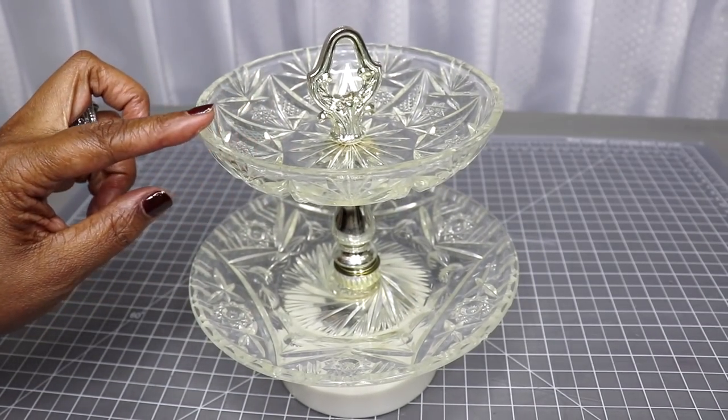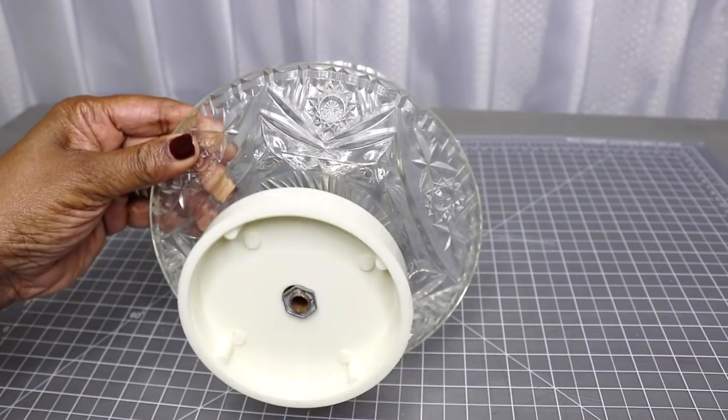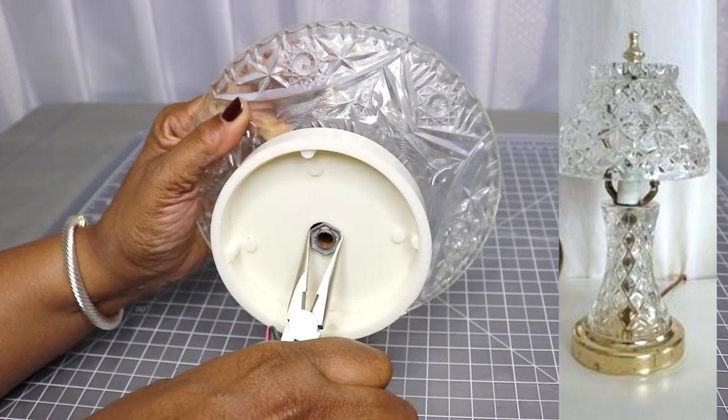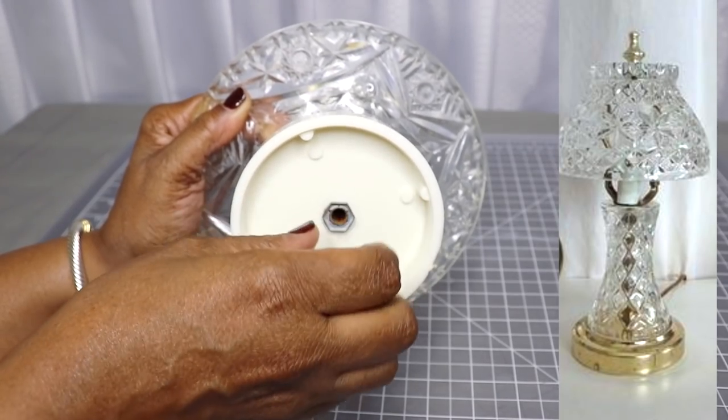So here is the candy dish that my mom gave me. It's a two-tiered candy dish and right here is a picture of an inspiration that I found on the internet. I wanted to create something that sort of reminded me of that.